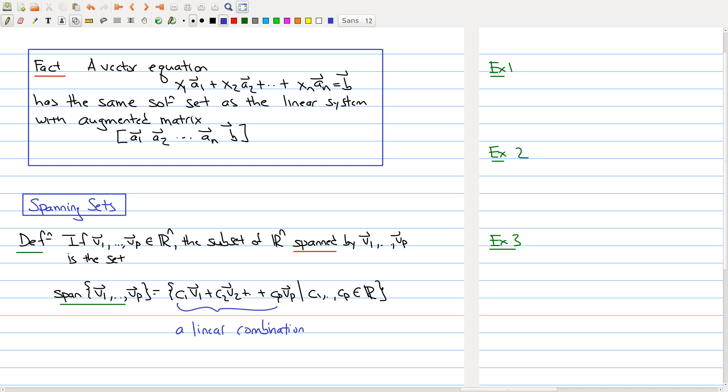That's the main idea of a spanning set: you have a collection of vectors and you form all possible linear combinations of the given vectors that you start with.